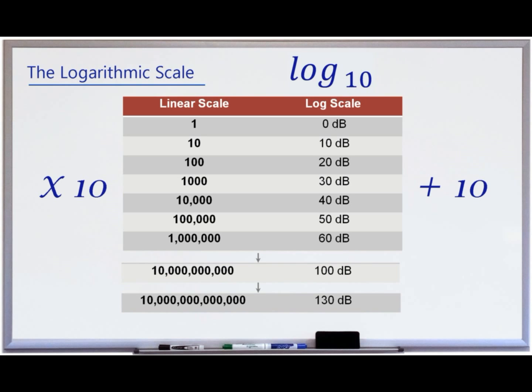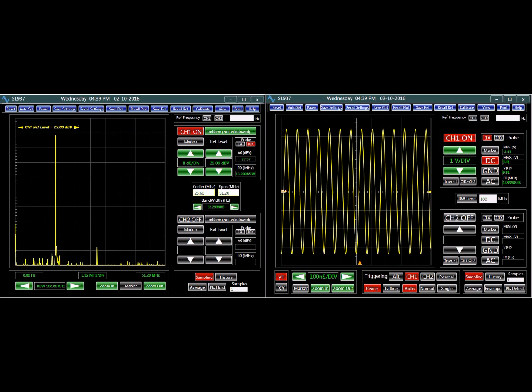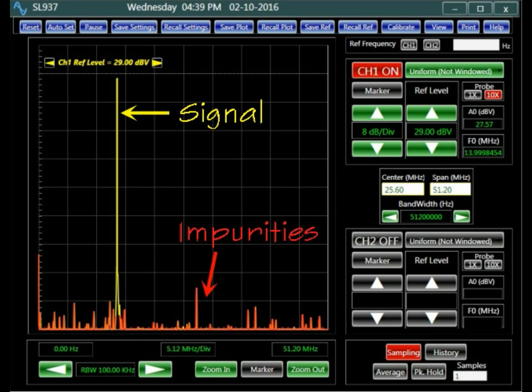A multiplication step on a linear scale becomes an addition on a logarithmic scale, making the math easier. For this reason various logarithmic scales are widely used in signal analysis and various engineering and scientific work. When the spectrum of a signal is displayed, the smaller signal components such as signal impurities and noise become noticeable.